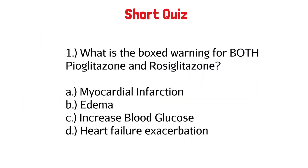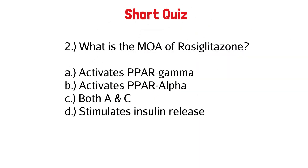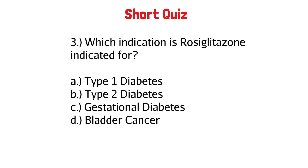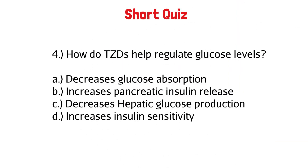What is the boxed warning for both pioglitazone and rosiglitazone? What is the mechanism of action of rosiglitazone? Which indication is rosiglitazone indicated for? How do TZDs help regulate glucose levels?